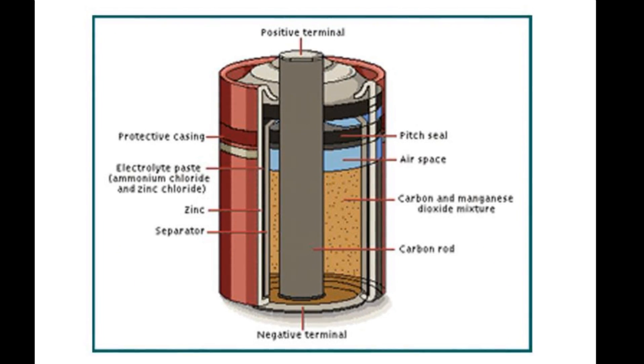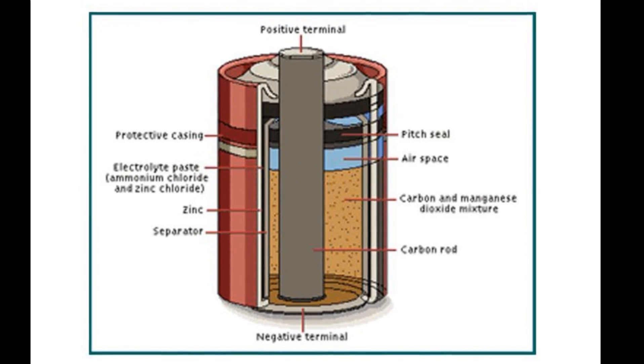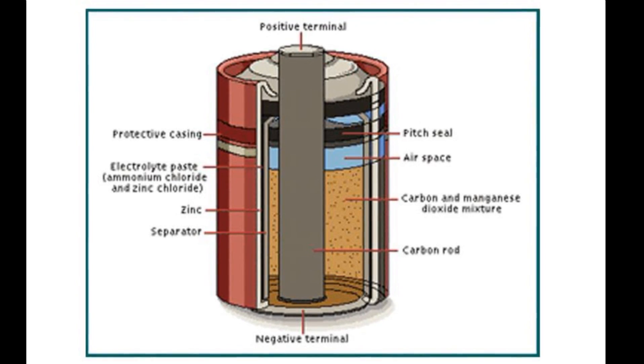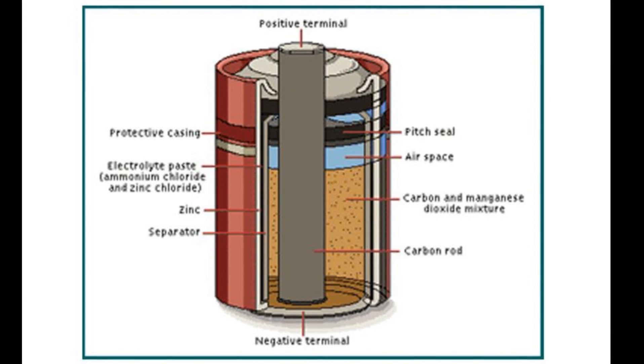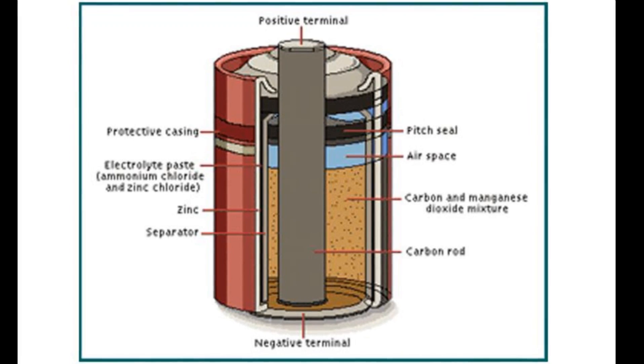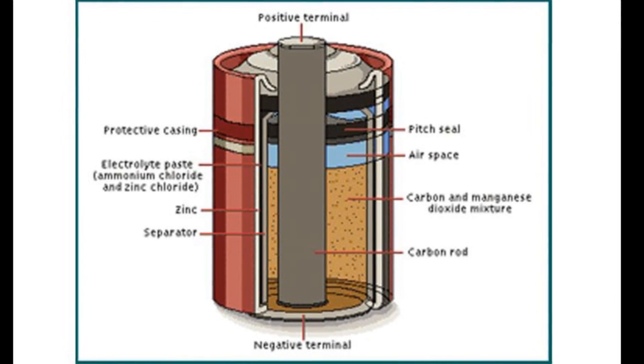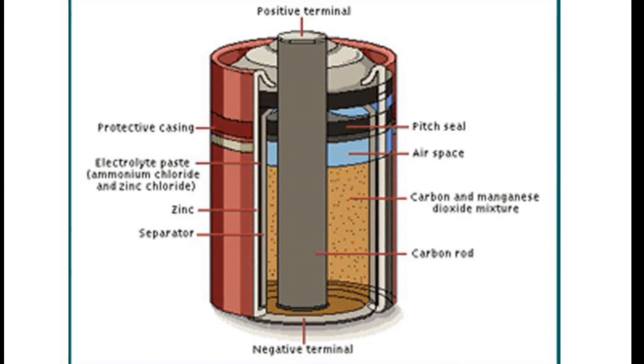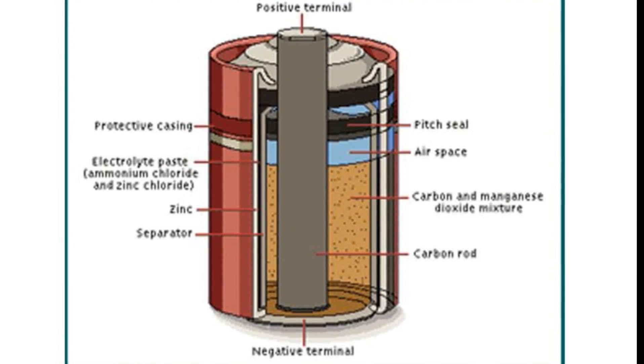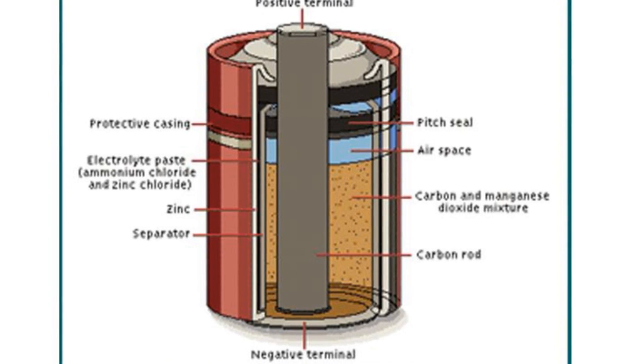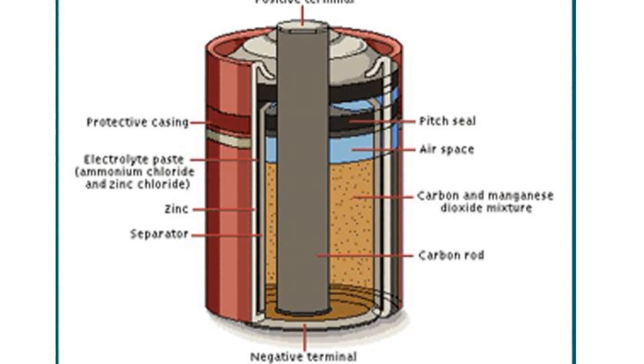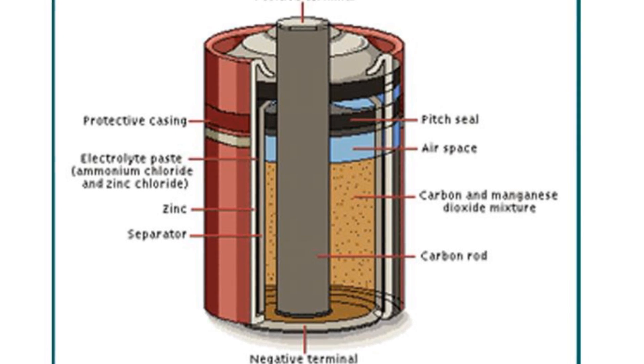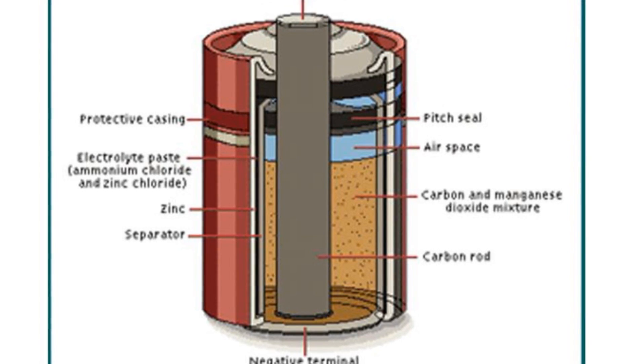On the outer side, there is a protective casing. Towards the center, in the middle, there is electrolyte paste, ammonium chloride and zinc chloride usually. Then there is zinc, then there is a separator that separates zinc and the electrolyte paste. Then there is a pitch seal, air space, then a carbon and manganese dioxide mixture in this particular battery, and then there is a carbon rod in the center.